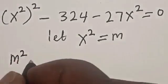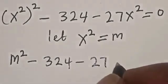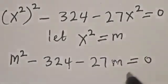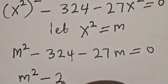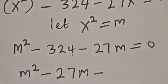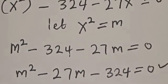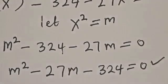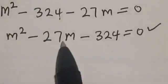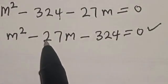We have x squared minus 324 minus 27x squared is equal to 0. Let's rearrange this. Then we have x to the fourth minus 27x squared minus 324 is equal to 0. This is a quadratic equation which can be solved using either the factorization method or the quadratic formula. In this case, I'm going to use the factorization method.